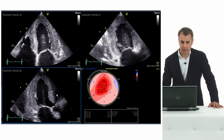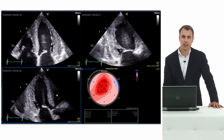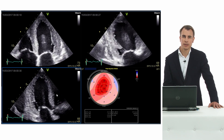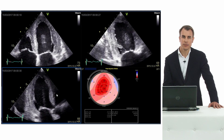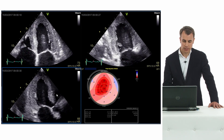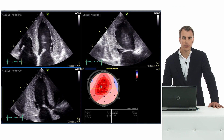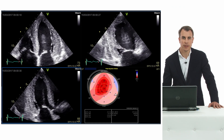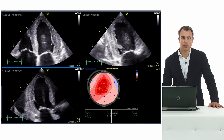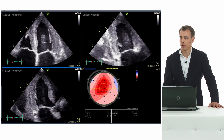This is the speckle tracking analysis and you see all the apical planes — three chamber, four chamber, and two chamber views. And on the right side here you can see the bullseye.